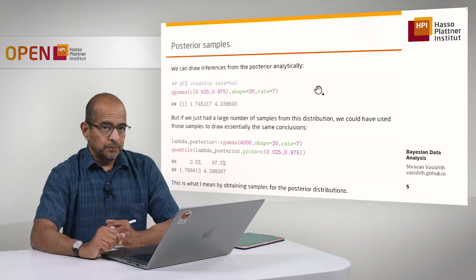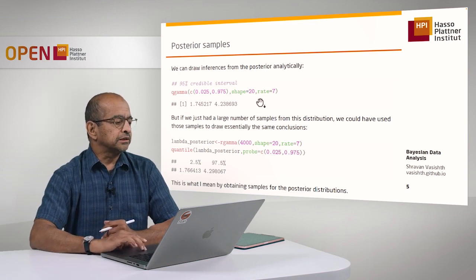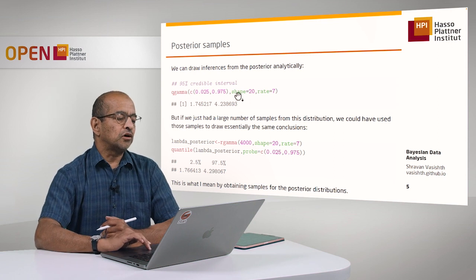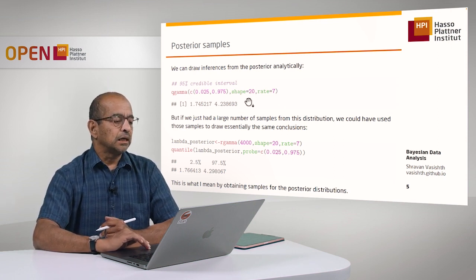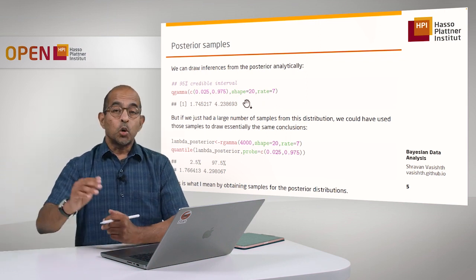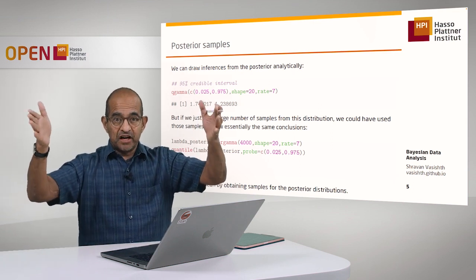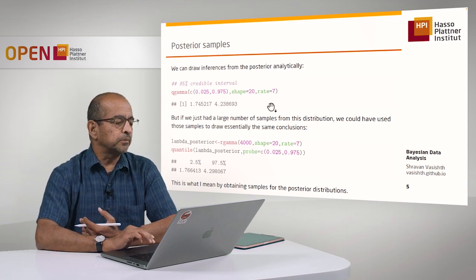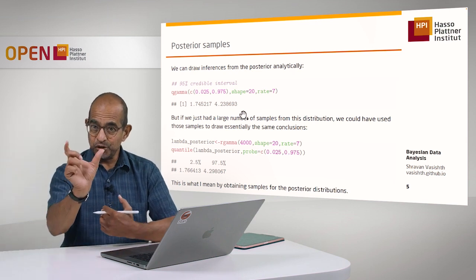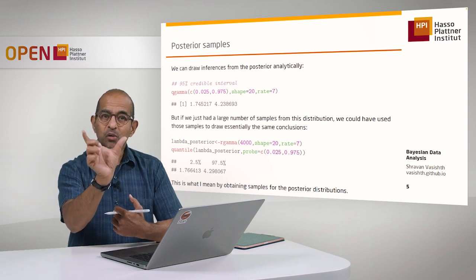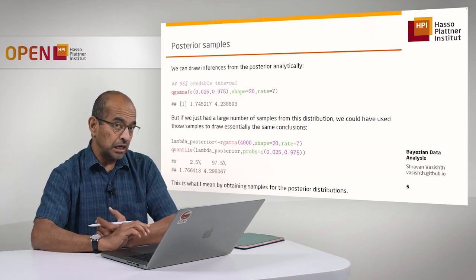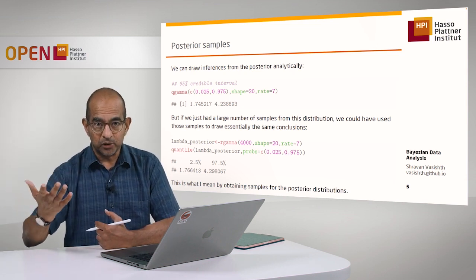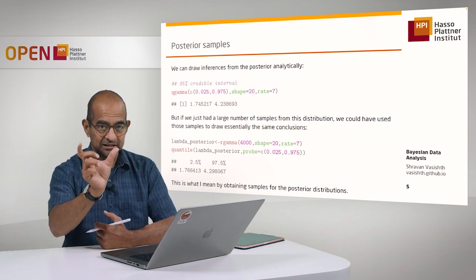Once you know the posterior — in this case gamma with shape and rate 20 and 7 — you can ask interesting questions about it using the Q-gamma function. For example, you can find the range of values such that you're 95% sure the lambda value lies within that range: a 95% credible interval. This is one of the big deals about the Bayesian approach — it gives you an uncertainty interval, so you can think about how unsure you are about the parameter after seeing the data. Bayesian data analysis is characterized as uncertainty quantification, and this is an example of that.